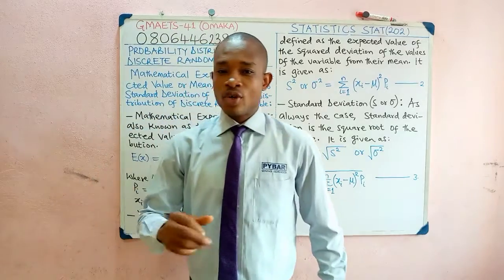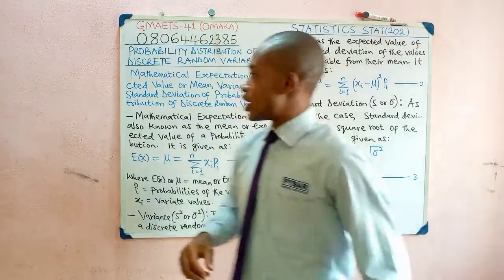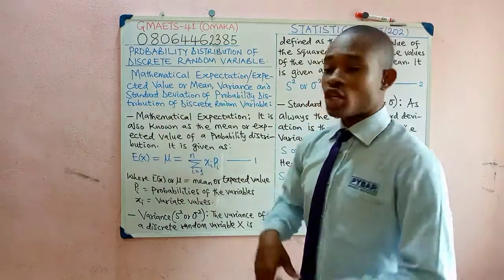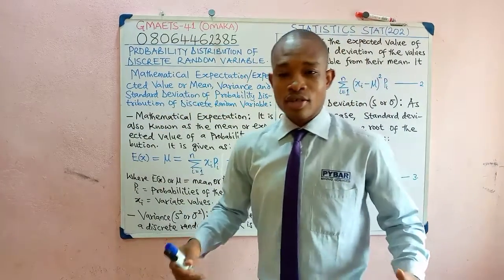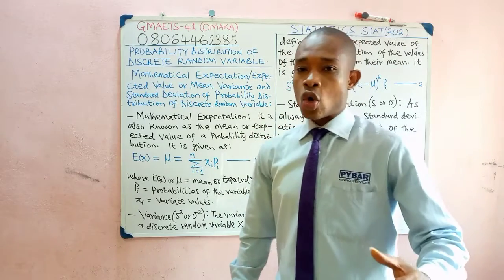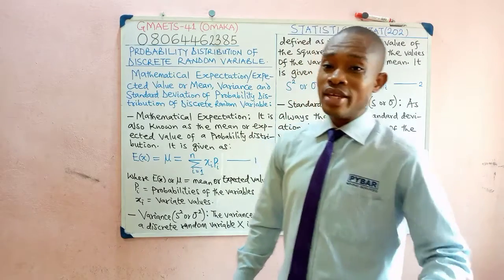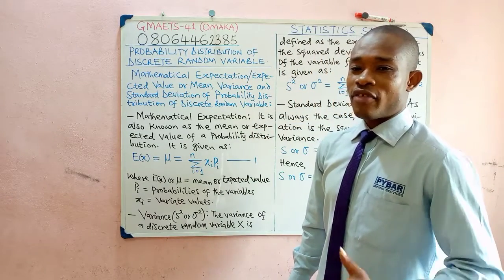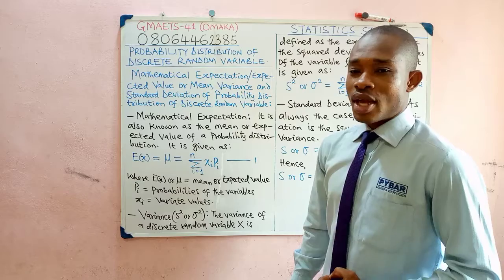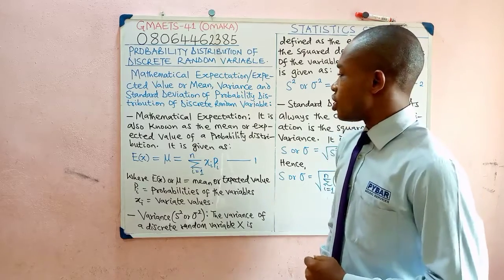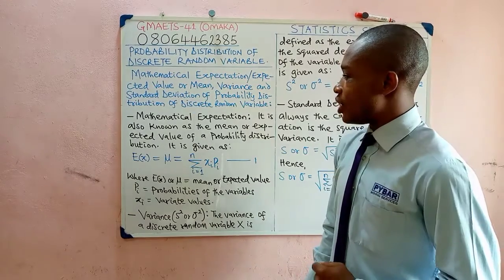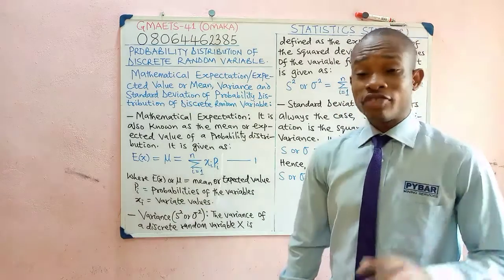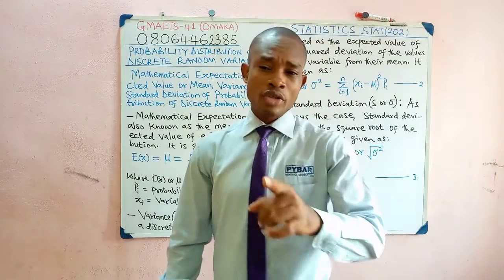In this video, we are going to look at the mathematical expectation, also known as expected value or the mean. We are also going to talk about the variance and the standard deviation of a probability distribution of a discrete random variable.